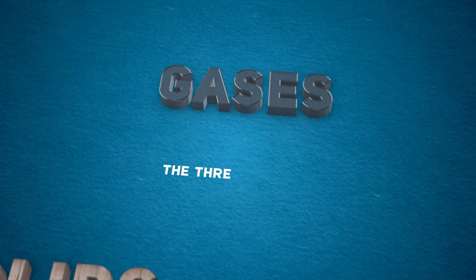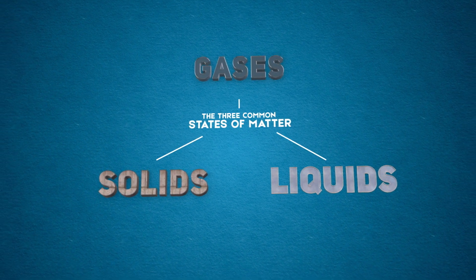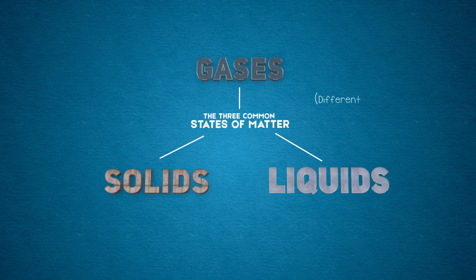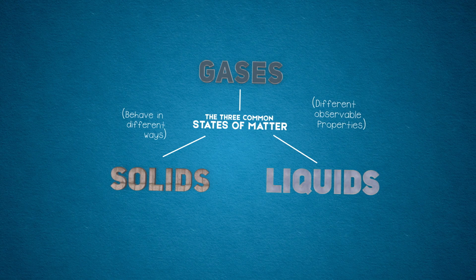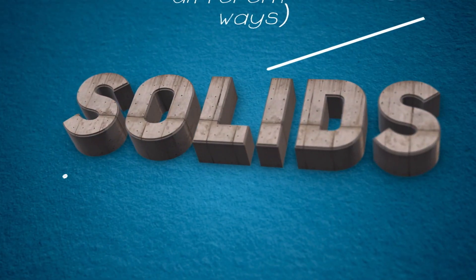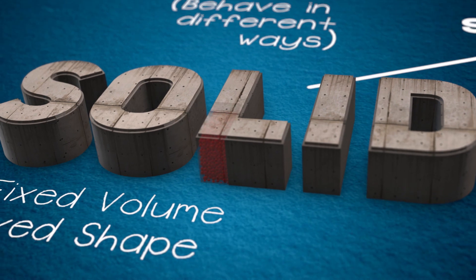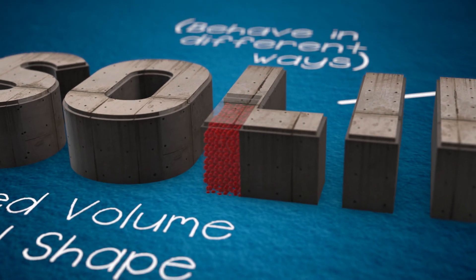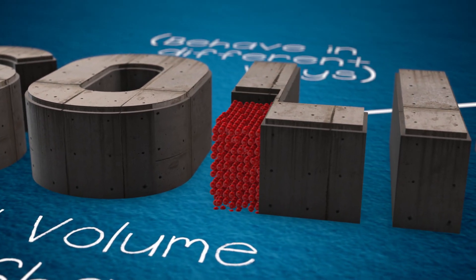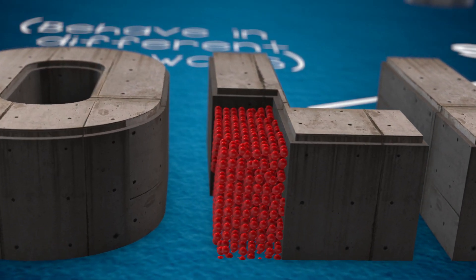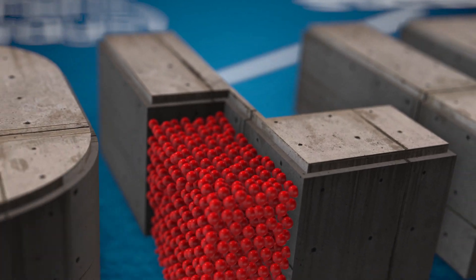The three common states of matter — solids, liquids and gases — have different observable properties and behave in different ways. A solid has a fixed volume and a fixed shape. Solids are usually tough and rigid. Their particles are close together and vibrate while in a fixed position. Solids cannot be easily compressed.